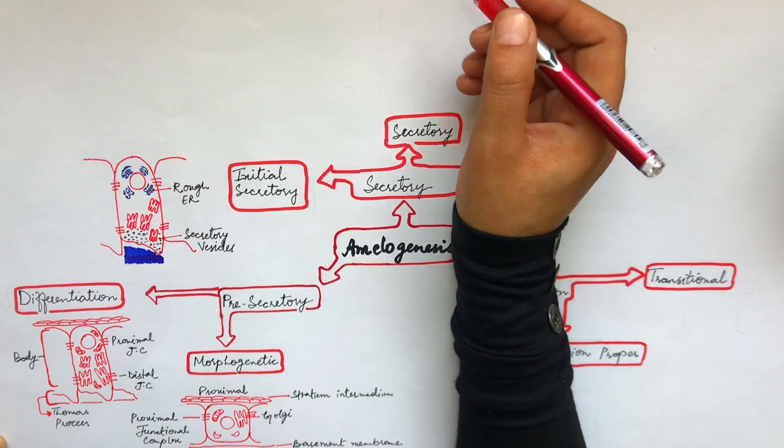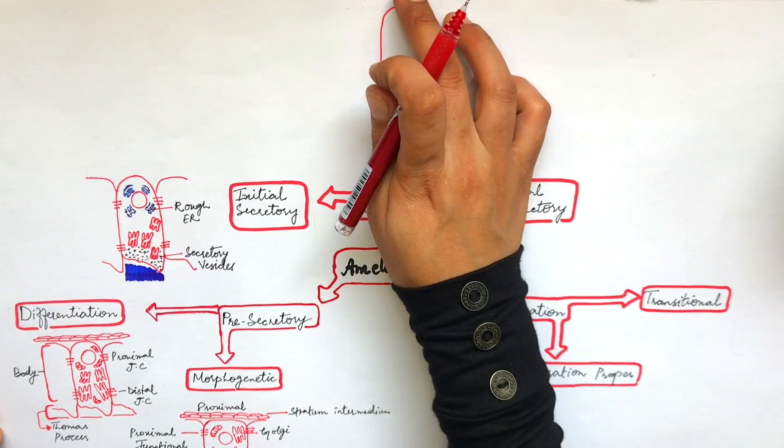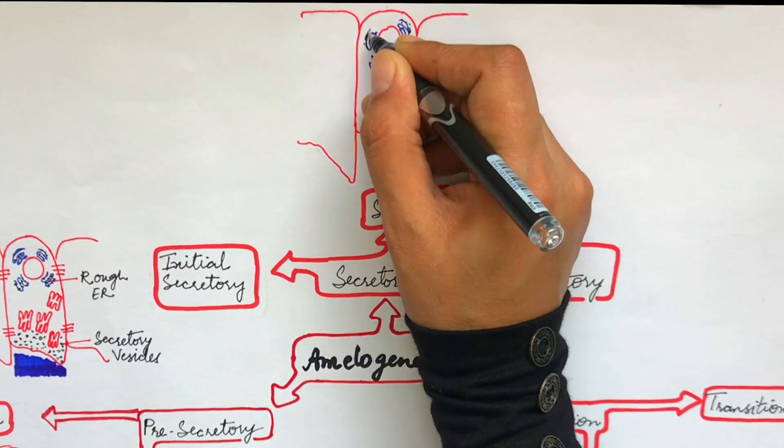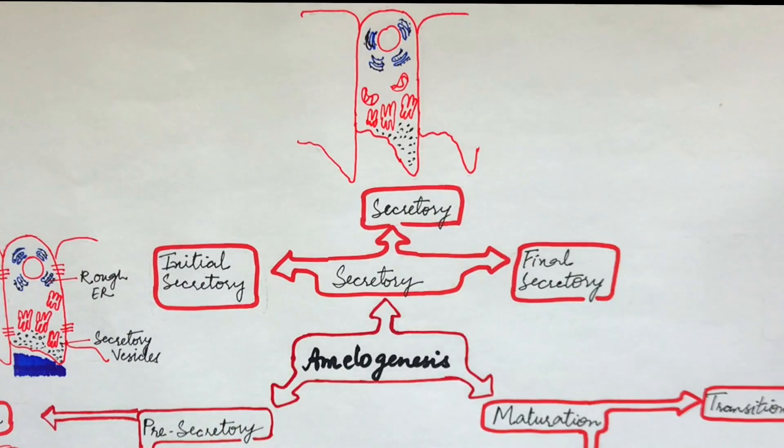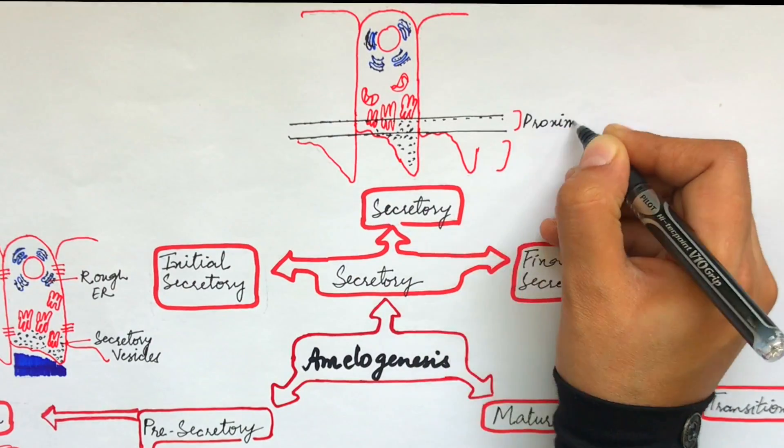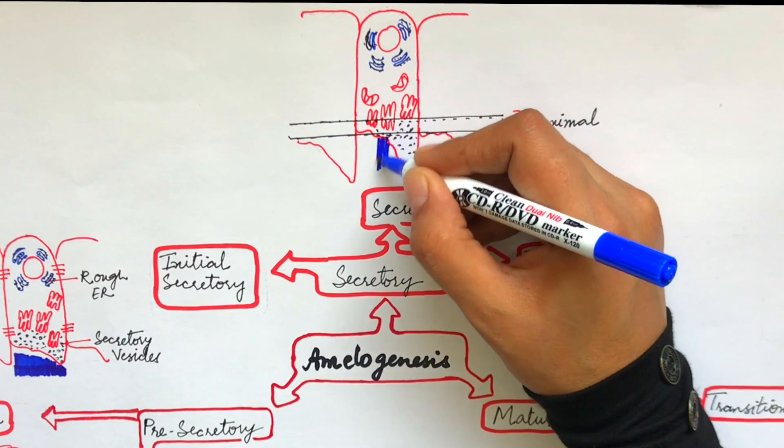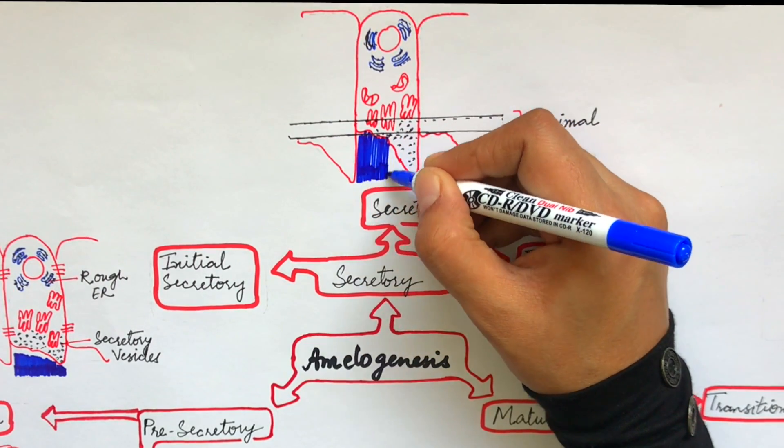In the secretory phase of the secretory stage, the ameloblasts migrate away and develop the distal portion of the Tomes' process as an outgrowth of its proximal portion. In the previous two phases which we discussed earlier, the ameloblasts only had this proximal portion. The proximal portion of the Tomes' process will form the inter-rod enamel while the distal portion of the Tomes' process will form the rod enamel.